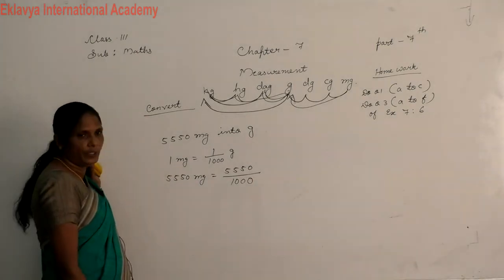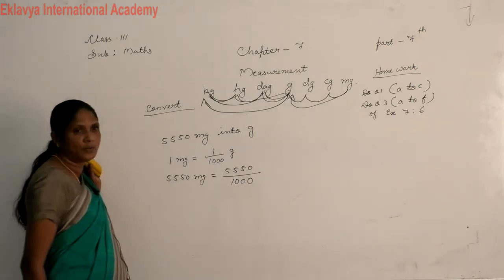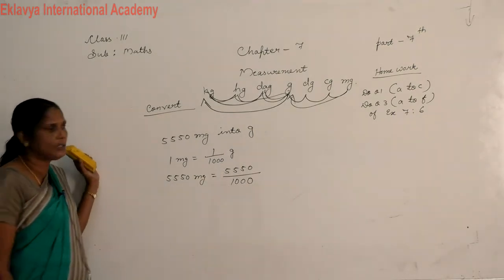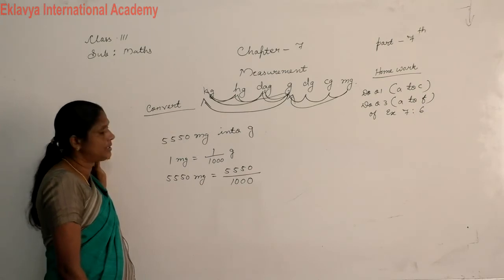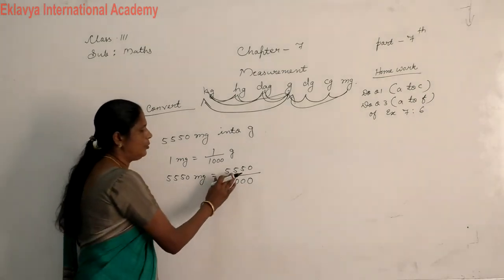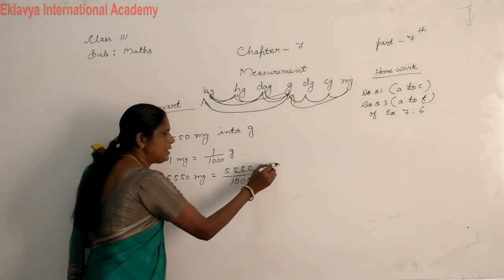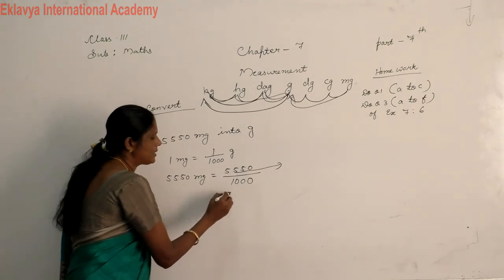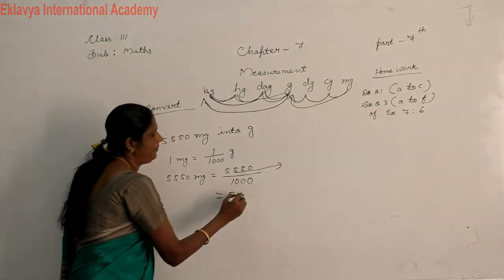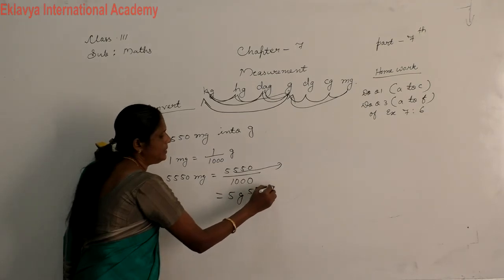How many digits we remove? How many zeros in 1000? 3 zeros. We remove how many digits? 3 digits we remove. That is, this 3 digits we remove. Our answer, 5 gram, 550 mg.